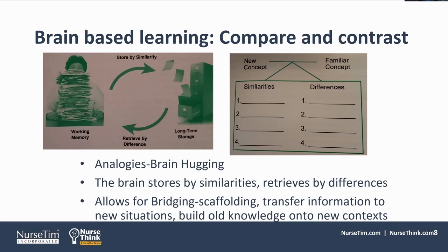They started retrieving that information. Brain analysts call this brain hugging — it's providing affection to your brain, allowing your brain to chunk. There's another word we also use: scaffolding — that's the platform upon which we build, transferring information to a new situation, building on to new context. So you knew about type one diabetes; now you have a woman who is pregnant with type one diabetes — how are you going to build that? Compare and contrast is really important. Whether you come up with a worksheet or a form within Google Docs that students can do compare and contrast and then send to each other in post-conference, there are a lot of different ways you can use this.